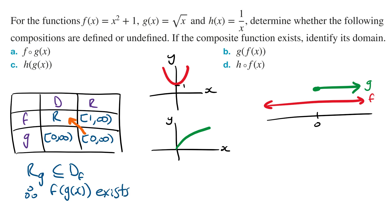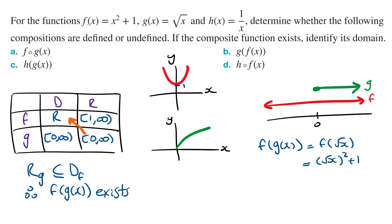To find the rule of f(g(x)), this is f(√x). Wherever there is an x in f(x), we replace it with √x. So this gives (√x)² + 1, which simplifies to x + 1.